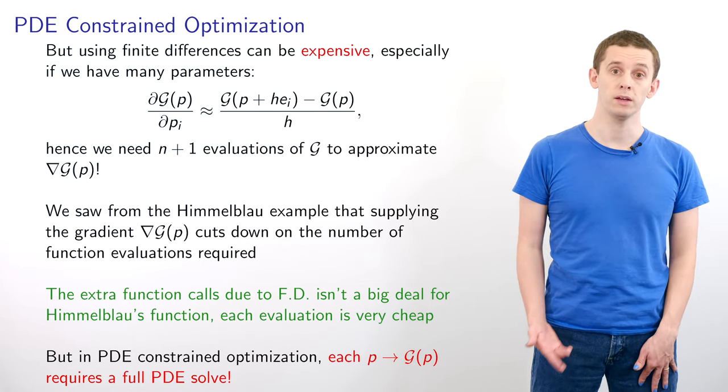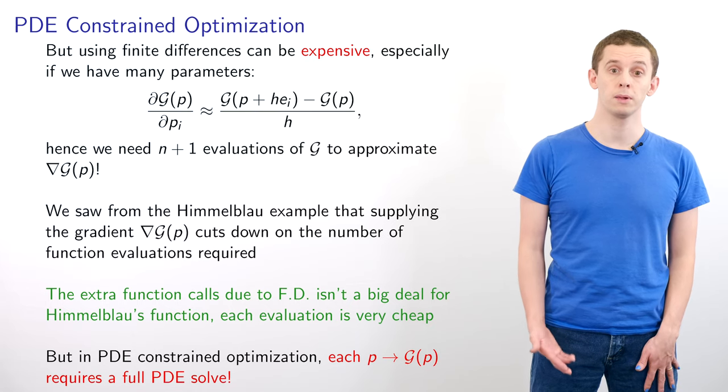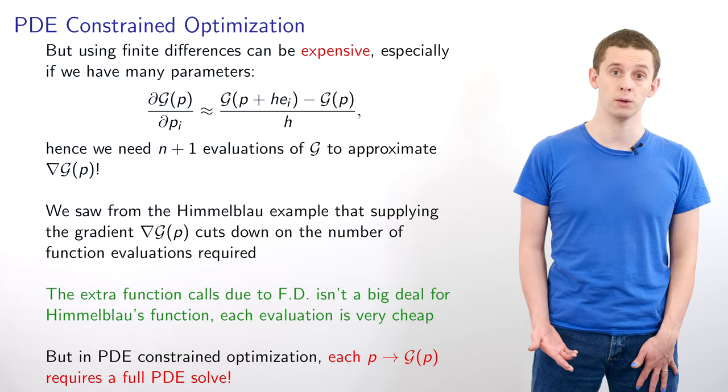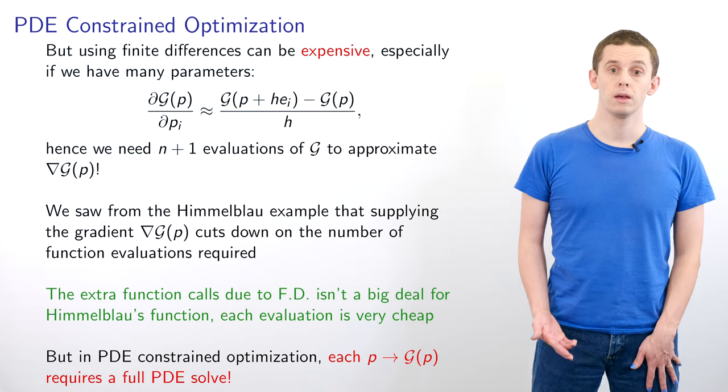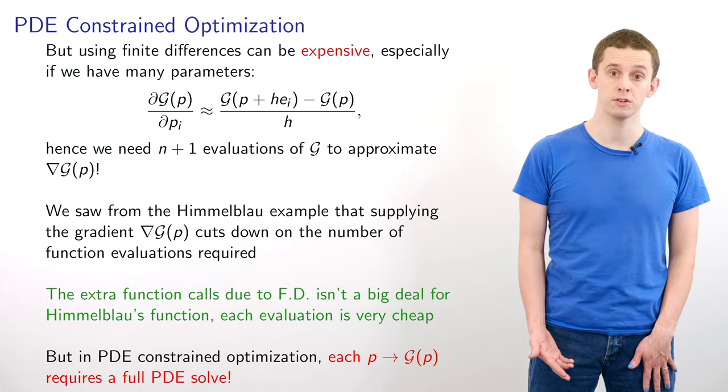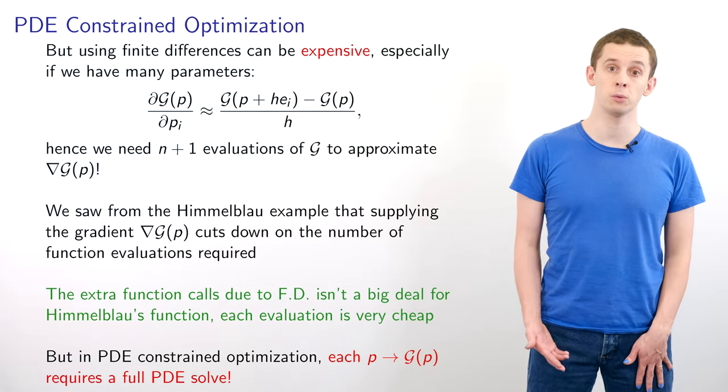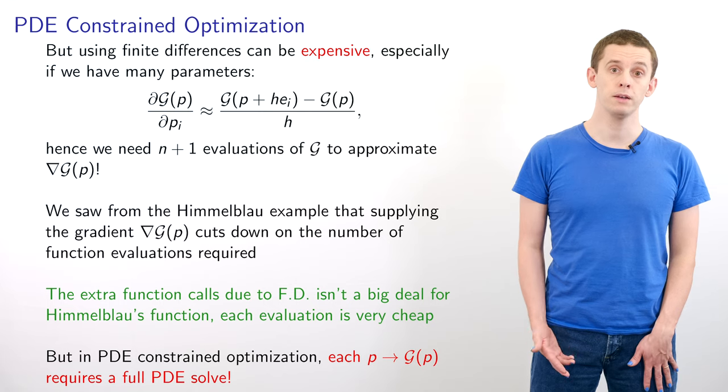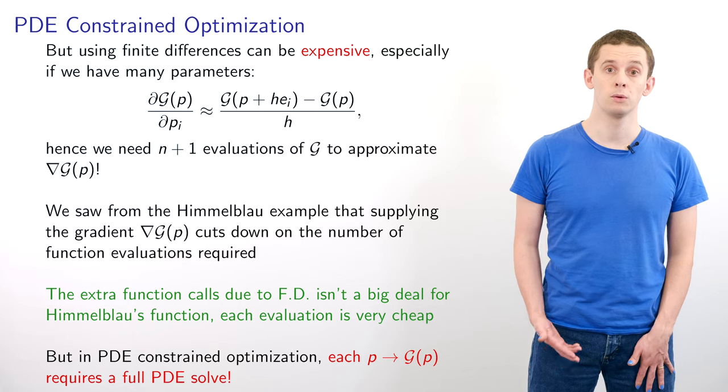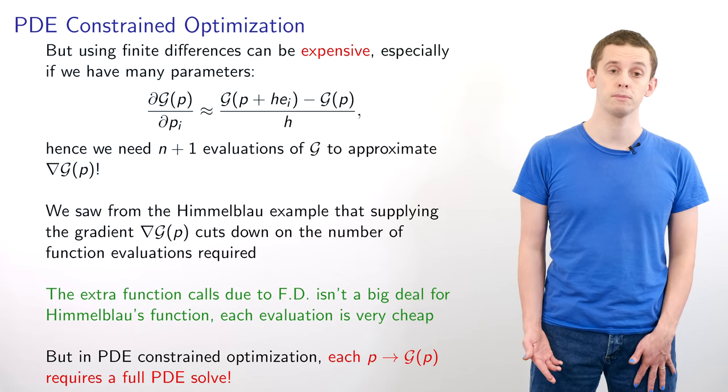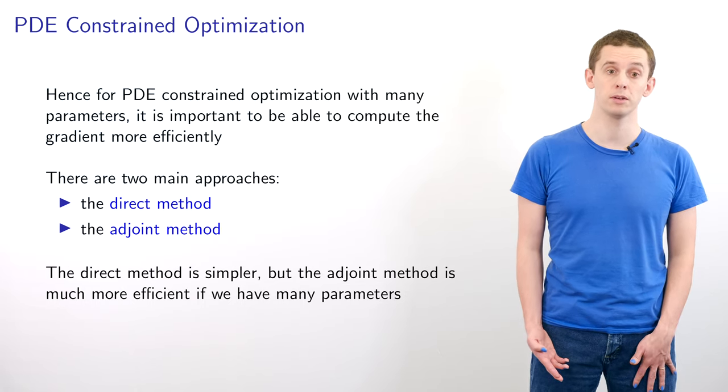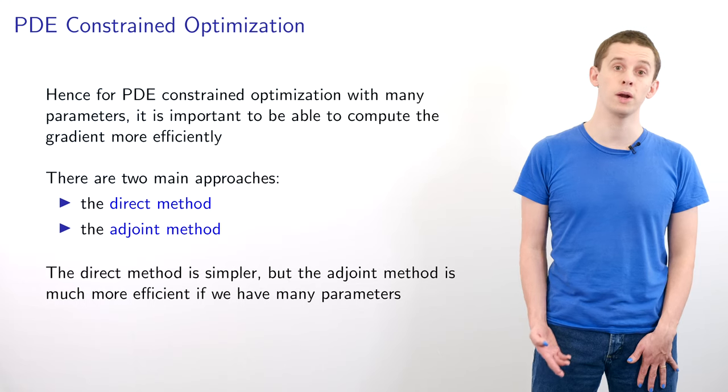We saw from the Himmelblau example that supplying the gradient of g cuts down on the number of function evaluations required. The extra function calls due to finite differences isn't a big deal for Himmelblau's function, since each evaluation is very cheap. But in PDE constrained optimization, each evaluation of g(p) requires a full PDE solve. Hence for PDE constrained optimization with many parameters it's important to be able to compute the gradient more efficiently.